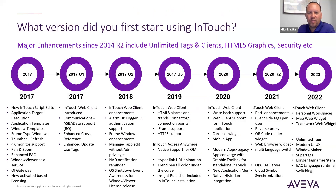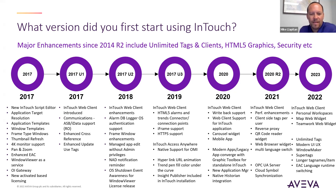I'm not going to go through every single new feature added over the past few years, but as you can see there is quite a bit. InTouch Web is certainly a new capability that came out back in version 2017, and there's been quite a bit of development on that — it's been a big focus for Aviva. HTML5 web clients for InTouch require no server; you can run InTouch Web directly off of a Windows 11 computer, for example.